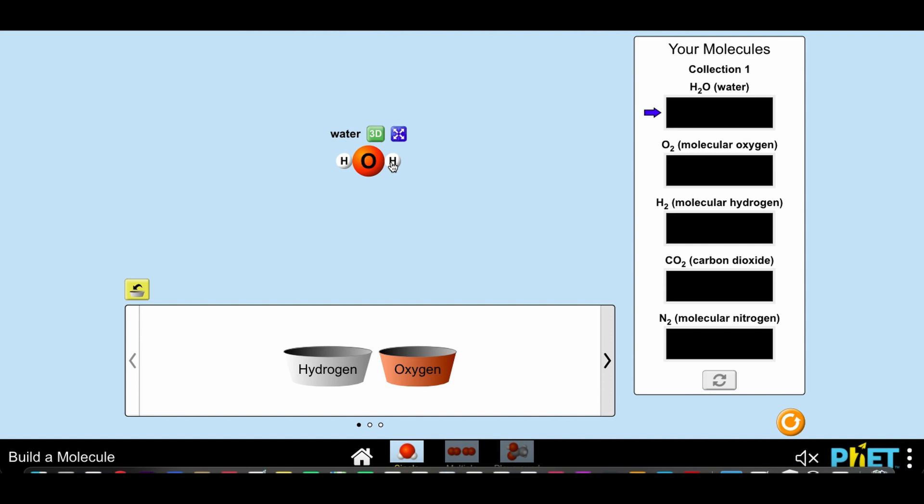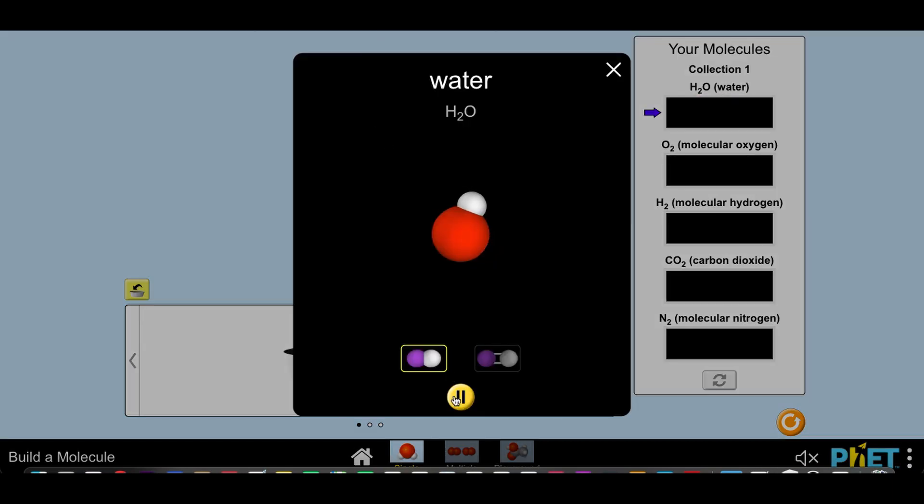Here we are building the molecule of water by combining an atom of oxygen with two atoms of hydrogen. By clicking on the 3D button, we can view the structural formula of the water molecule.